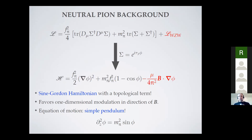The anomaly — the Wess-Zumino-Witten term — simplifies to a single contribution to the effective Hamiltonian: a gradient of the pion field dotted into the external magnetic field, multiplied by the baryon number chemical potential. To find the ground state of QCD in magnetic fields and baryon chemical potential, we need to minimize this Hamiltonian. Interestingly, once we have thrown away the charged pions, this anomaly term becomes a pure surface term, since the divergence of the magnetic field is zero.